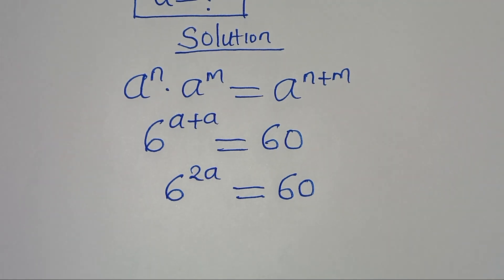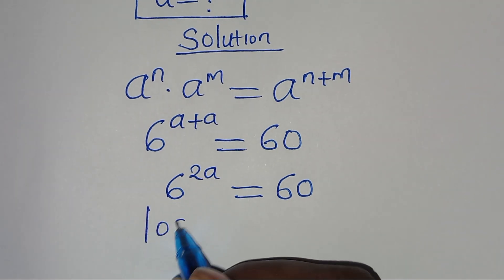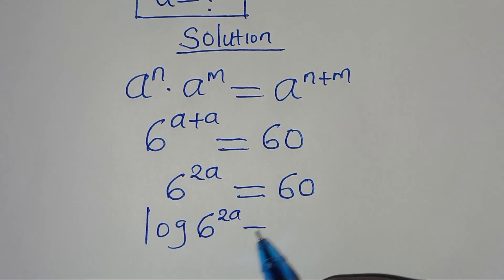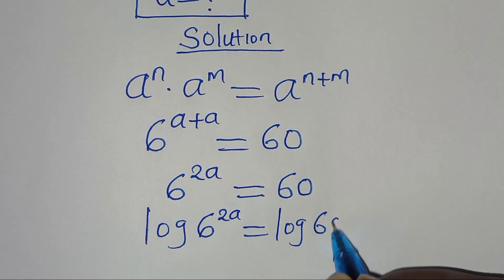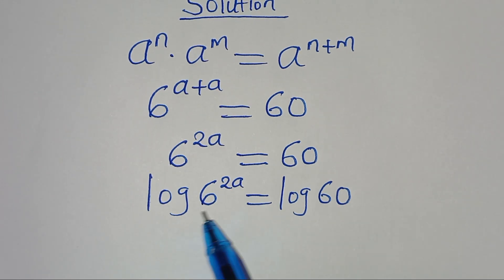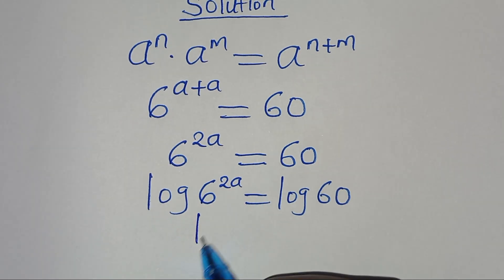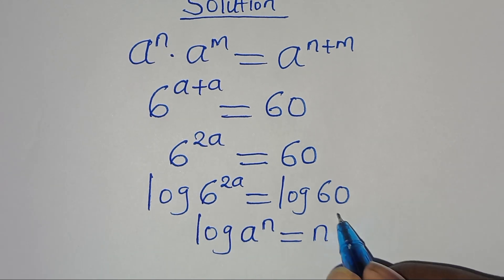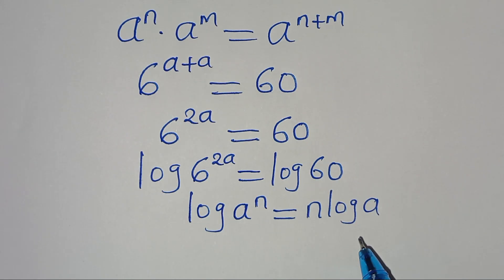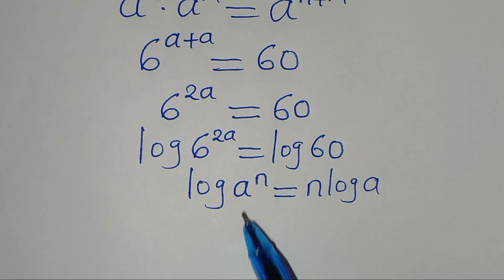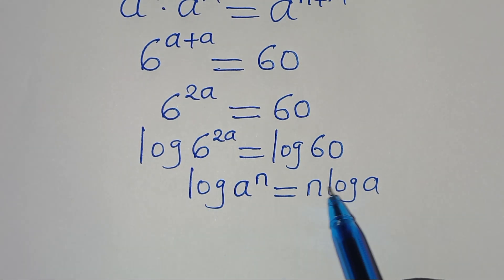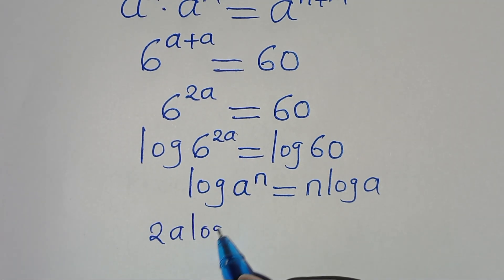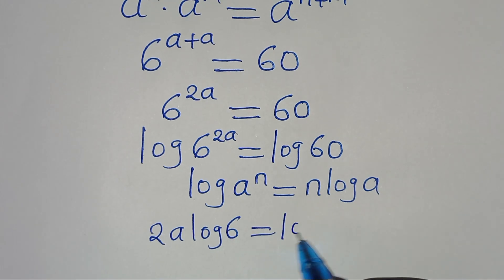Now, to solve for the value of a, we introduce logarithm on both sides, so that we have log of 6 to the power of 2a, which is equal to log 60. The next step is that log of 6 to the power of 2a is in the form of log a to the power of n, which we can express as n·log a. Applying this, log 6 to the power of 2a becomes 2a·log 6, and this is equal to log 60.